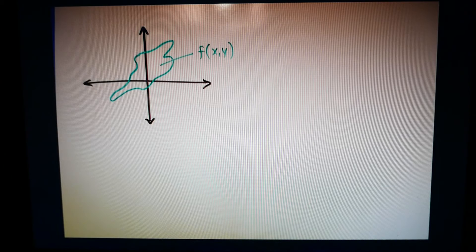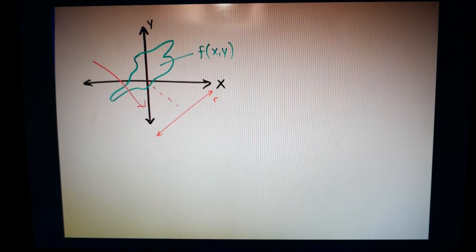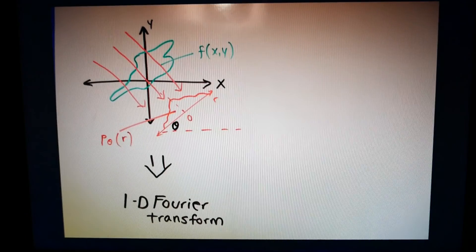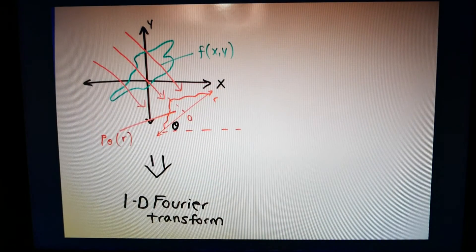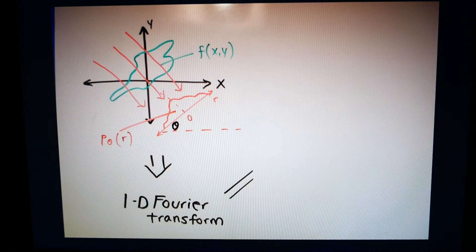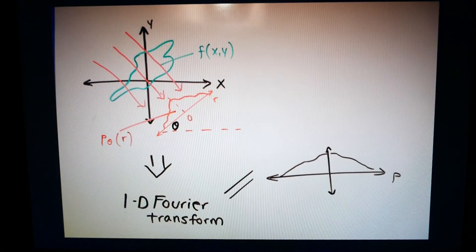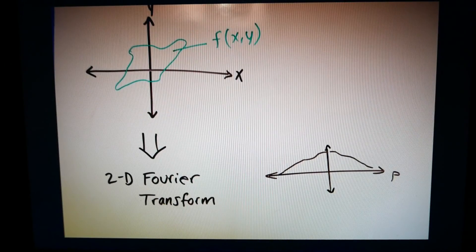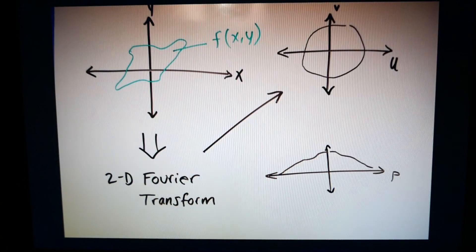If f of xy is the original image and a projection is taken of that image at angle theta, we can denote the projection as p theta r. Next, a 1D Fourier transform of that image will produce a slice image of the object that looks something like this. Taking a 2D Fourier transform of the image produces an image in the frequency domain that looks something like this.